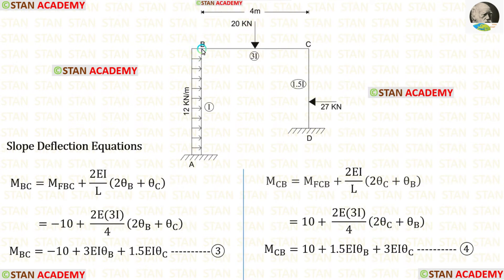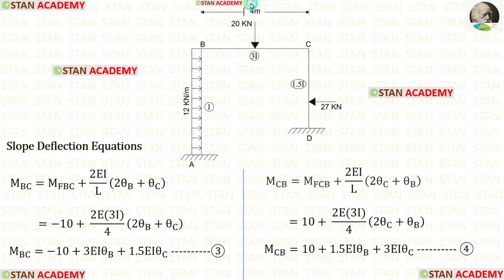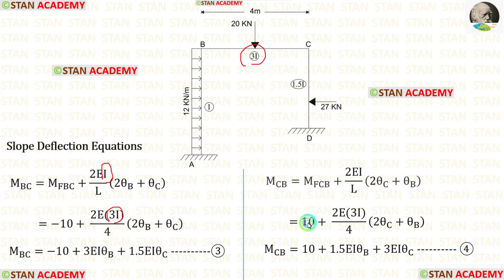Now let us make the slope deflection equations for beam BC. In the equations let us apply the fixed end moments. The length of BC is 4 meters. The moment of inertia for BC is 3i, so instead of i we have to apply 3i. Finally, in beam BC we have made two equations.